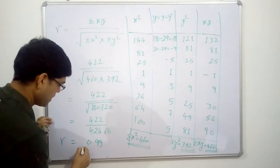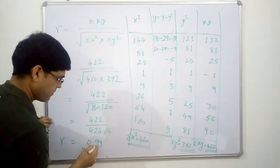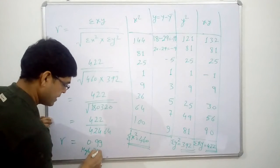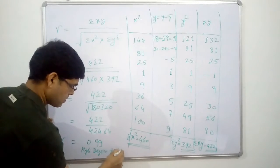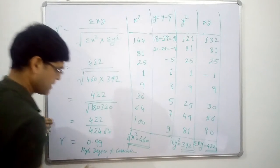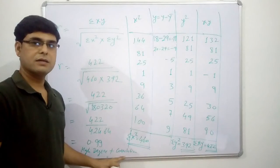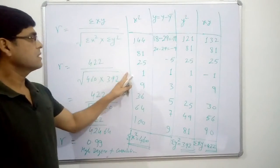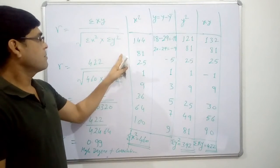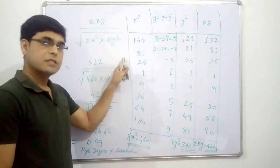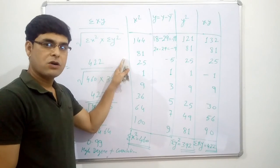So, correlation becomes 0.99 — this indicates a high degree, almost perfect, positive correlation. You will write it as high degree positive correlation. This was the calculation procedure of correlation by Karl Pearson's method. Thank you very much for watching this video, have a nice day ahead, God bless you.